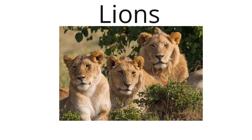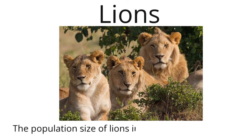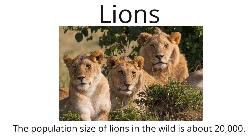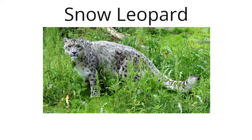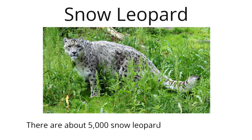Lions: The International Union for the Conservation of Nature lists lions as a vulnerable species. In fact, lions are endangered in some African countries. Their numbers are falling quickly as a result of human-lion conflicts and habitat loss. The population size of lions in the wild is about 20,000. Snow Leopard: Snow leopards are mainly found in Europe. The population of snow leopards is falling due to habitat loss and hunting. There are about 5,000 snow leopards left in the wild.